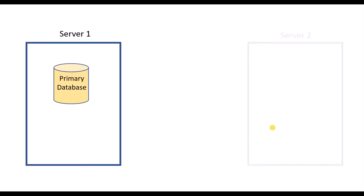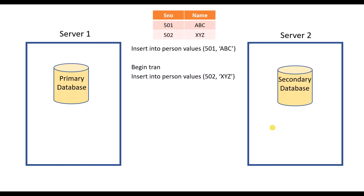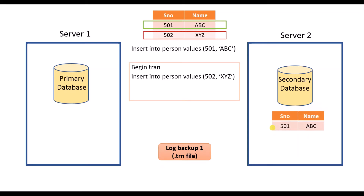Let us assume we have one server with a primary database and another server with a secondary database, and we have two transactions: one committed transaction and one uncommitted transaction — we do not know whether this transaction is going to commit or not. When, as part of log shipping configuration, a tlog backup is initiated at this stage and restored at the secondary database, only the committed portion will be returned to the secondary database. The uncommitted portion will be stored in the tough file and will wait for the next tlog backup.